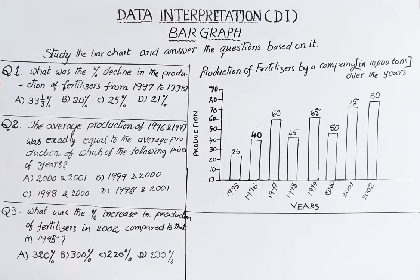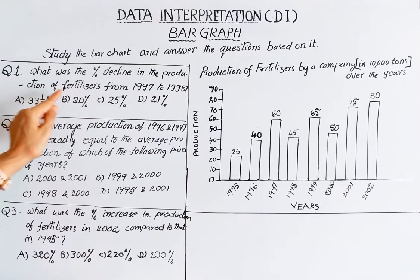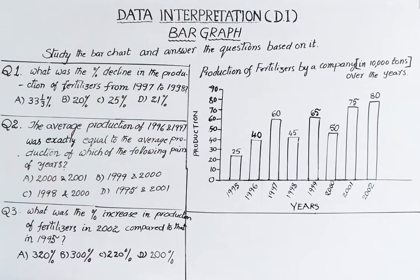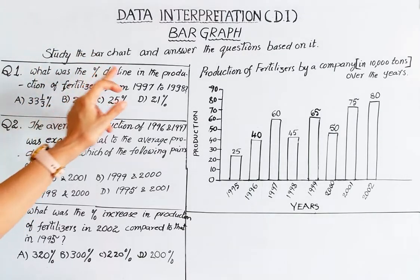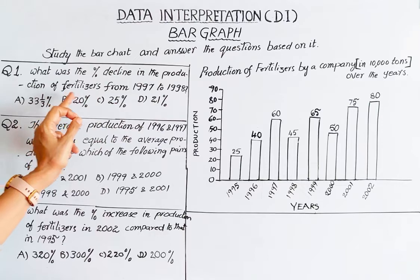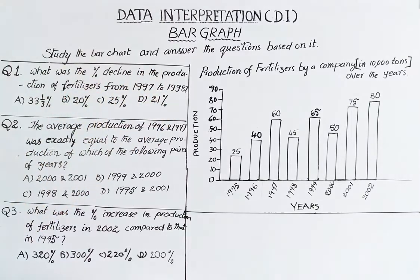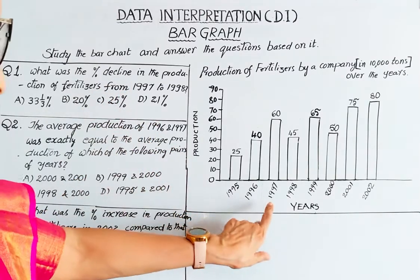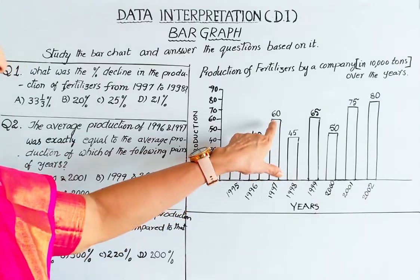First question: What was the percentage decline in the production of fertilizers from 1997 to 1998? Decline means decrease. What is the percentage decline in the production?